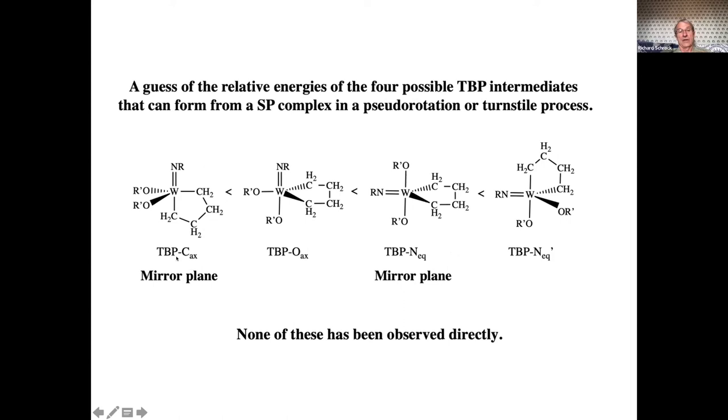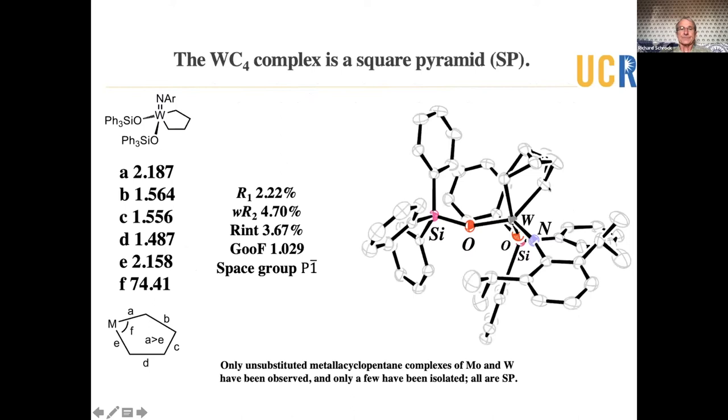But there are four others, three others, four total, that are possible, and these are what I call them. These are now, if you can't see them, they must be greater than two kcals higher in energy, but they have to be there because the process passes through. Either one of them, shown here with a mirror plane, or this one over here with a mirror plane. The others don't have mirror planes, but they may be part of the fluxional process of the very pseudo rotation type. But none of these has been observed.